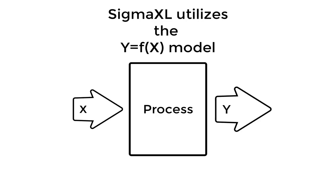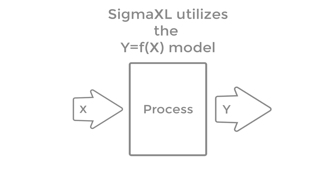For example, Y could be customer satisfaction as measured on a survey and X could be location or responsiveness to calls. The goal is to figure out which X's from among many possible are the key X's and to what extent do they impact the Y's of interest. Solutions and improvements then focus on those key X's.